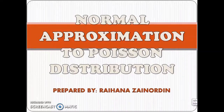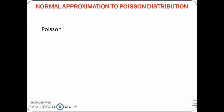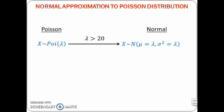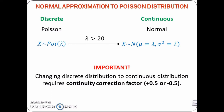Normal Approximation to Poisson Distribution: Suppose that we have a Poisson distribution with parameter lambda. If lambda is greater than 20, then the Poisson distribution can be approximated to a normal distribution with mean equals to lambda and variance equals to lambda. Poisson distribution is a discrete distribution, whereas Normal Distribution is a continuous distribution. It is important to note that changing a discrete distribution to a continuous distribution requires a continuity correction factor.